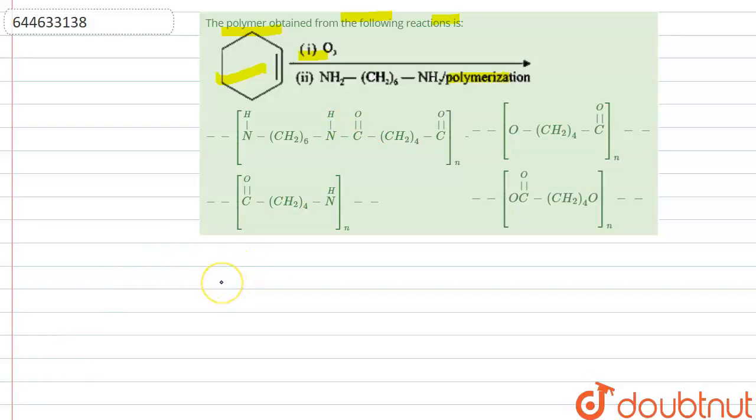Before starting this question solution, we should have some basic knowledge related to ozonolysis of alkene. Suppose if any alkene like CH2 double bond CH2 will react with the ozonolysis reagent O3 over zinc H2O, then it will form an aldehyde. We can simply form aldehyde using the trick that it will form CH2 double bond O plus CH2 double bond O, i.e. it will form formaldehyde.